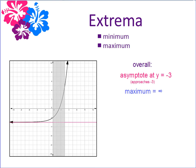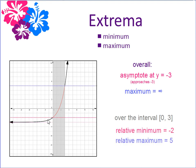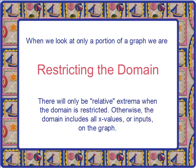What if I only want to look at a small section of the graph? I'm going to cut off the section from where x is 0 out to where x is 3, looking at the interval from 0 to 3. I can say now I have a relative minimum at negative 2 and a relative maximum at 5. Relative extrema values are much easier to find when we look at only a portion of a graph — we're doing something called restricting the domain. There will only be a relative minimum and a relative maximum, and relative extrema only exists when the domain is restricted.